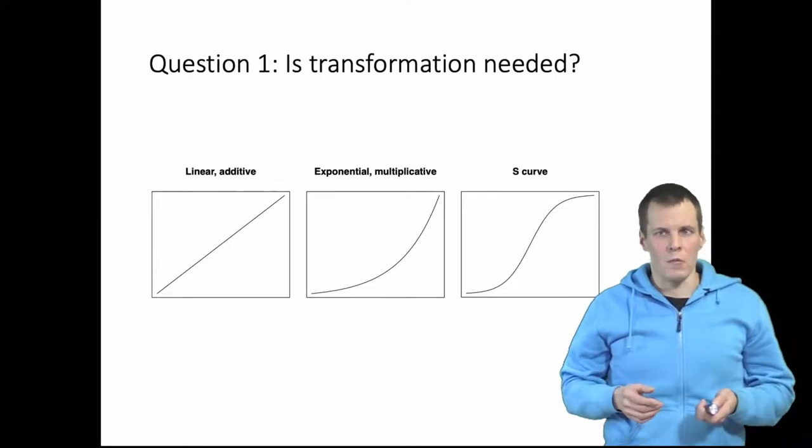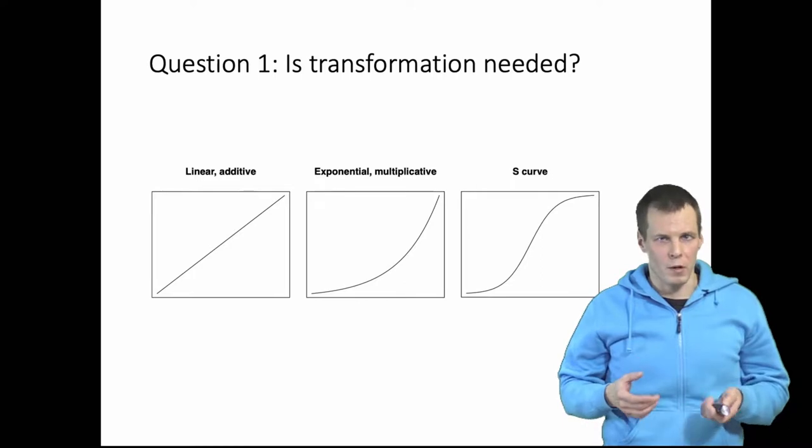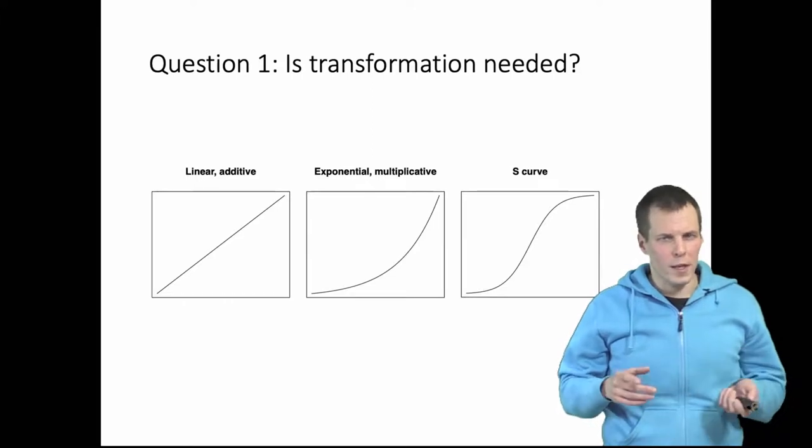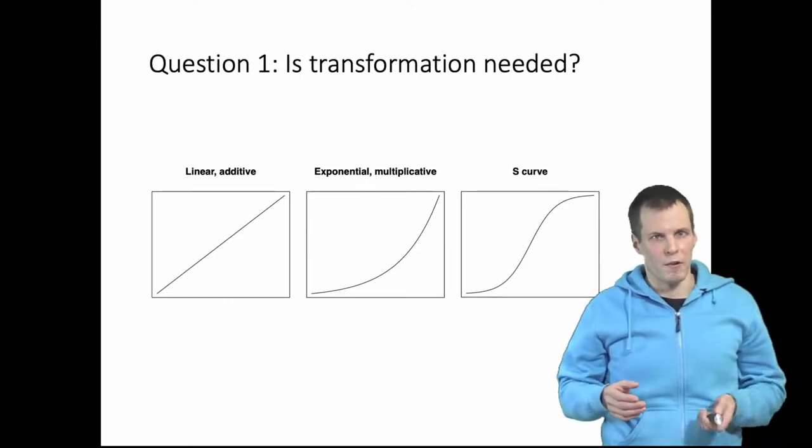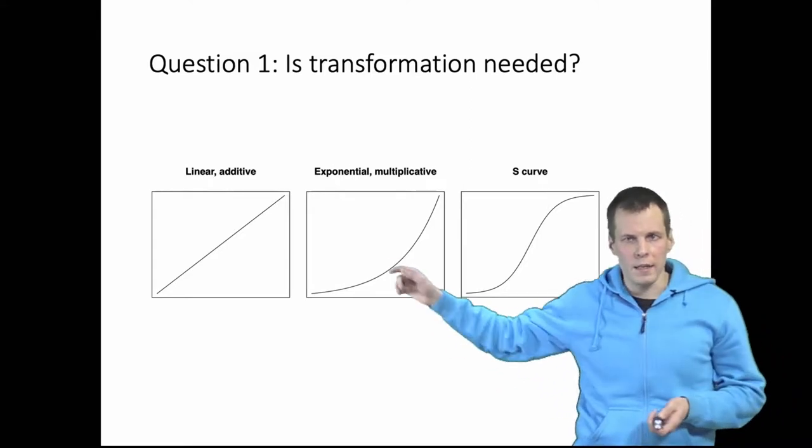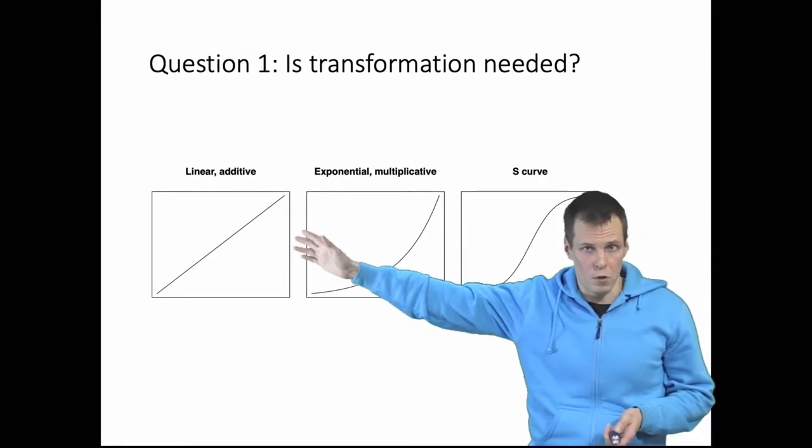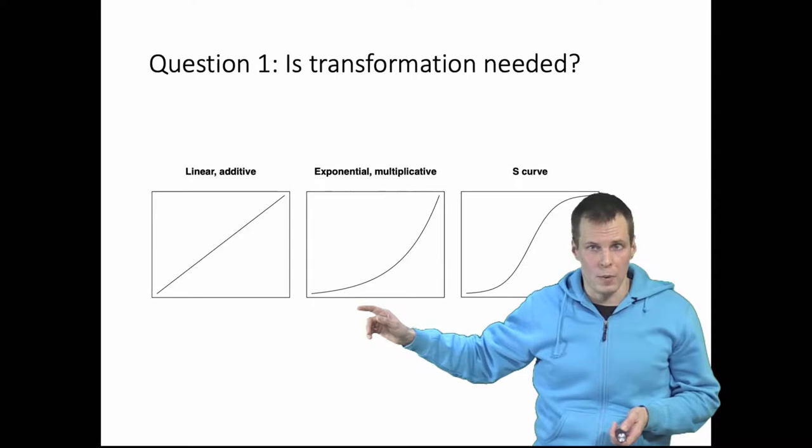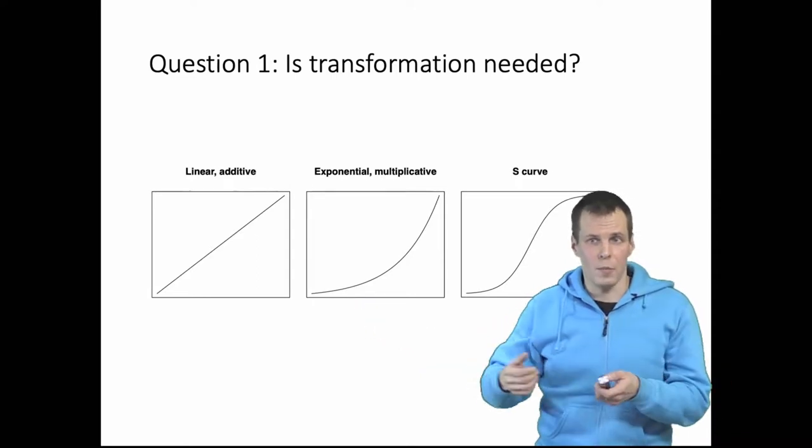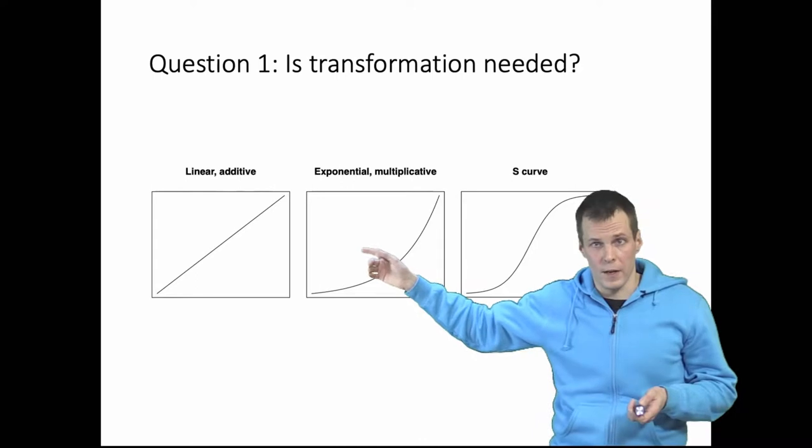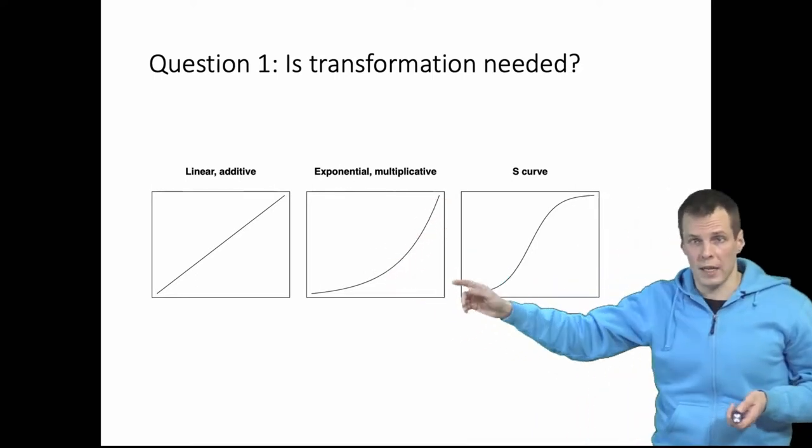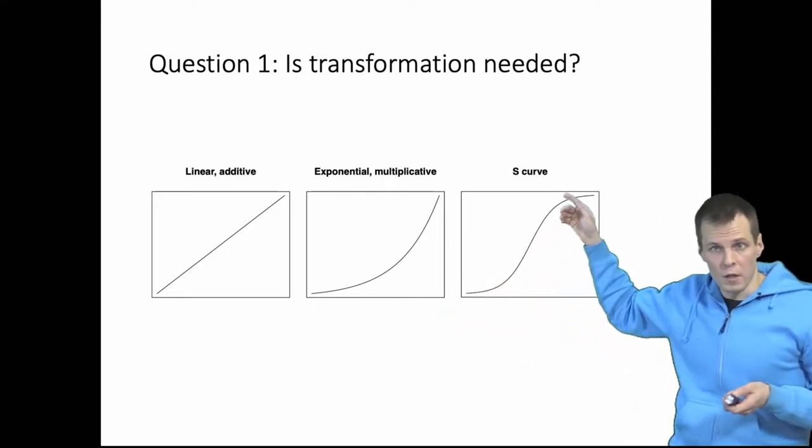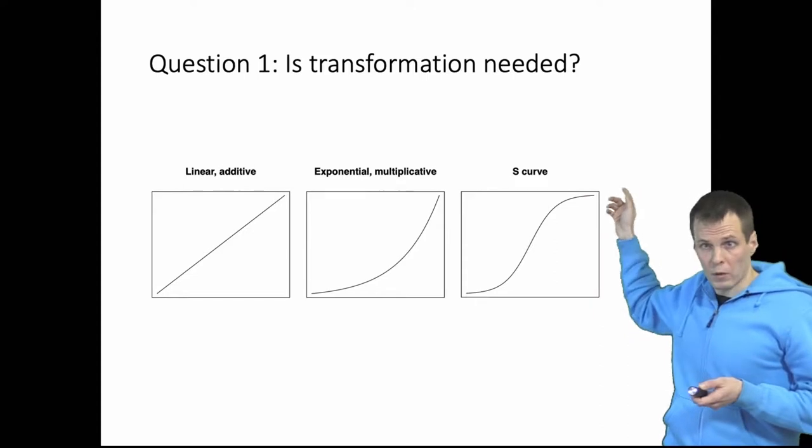The question number one out of two questions of whether GLM is required or is useful is, is transformation required? So what do you think is the nature of the relationship with your independent variable and the dependent variable? Is it linear and additive? Or is it exponential and multiplicative which means that you multiply the effects of independent variables together? Or is it perhaps the S-curve when the effect is first very small then increases and then it's very small because everybody is at 100% already?